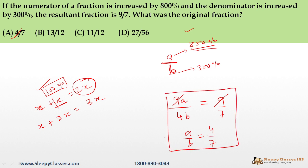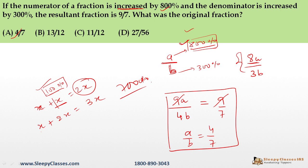Now let me explain where people go wrong. The key word is 'increased by'. If you mistakenly make the numerator 8A instead of 9A, you would be calculating 700% increase, not 800%. The 800% increase means you add 8A to the original A, giving 9A total. Do not confuse '800% increase' with 'multiply by 8'. That is a very common mistake that will lead you to the wrong trap option.